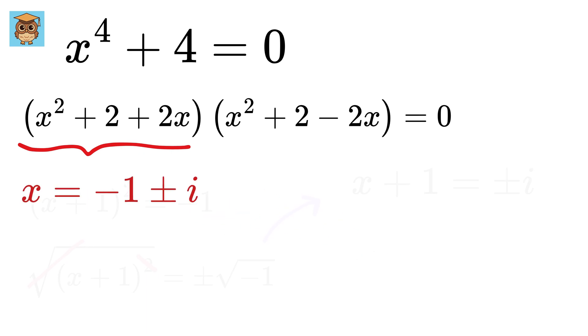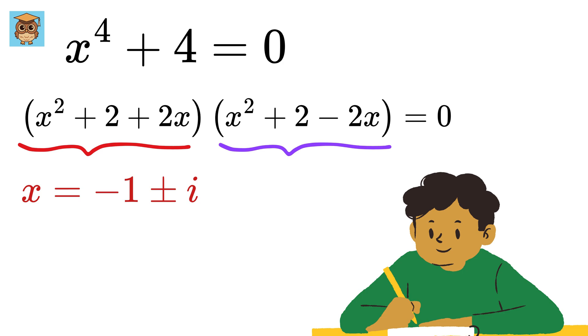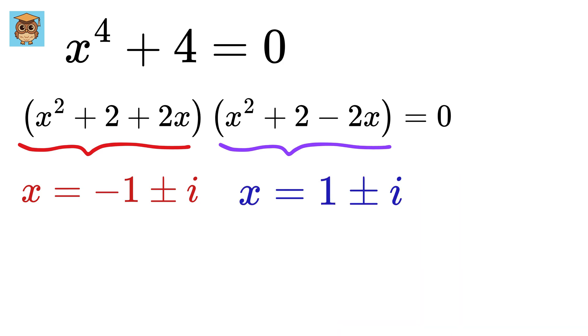Awesome! Now, for this second quadratic equation, I will leave it as an exercise for the viewers. And it will turn out to be x = 1 ± i. That's it!